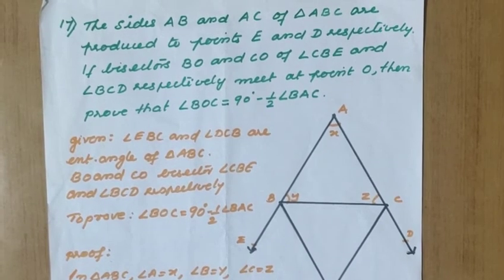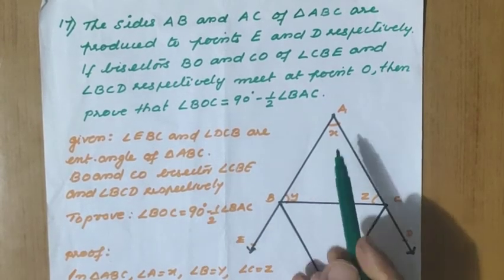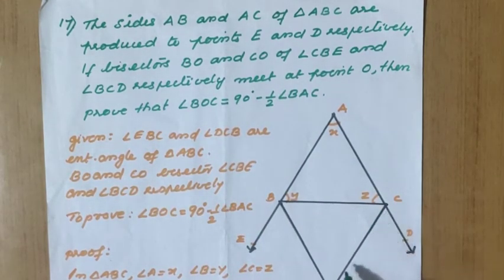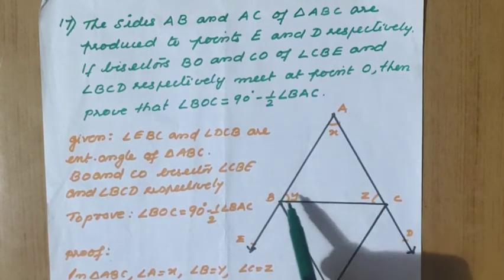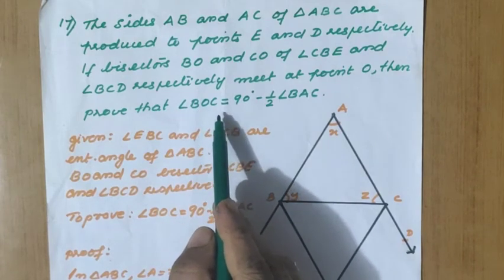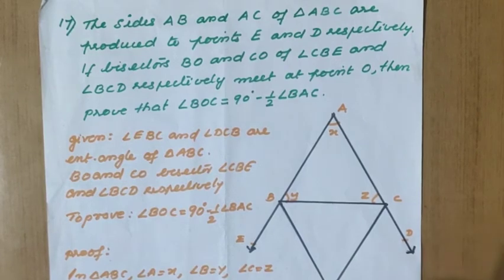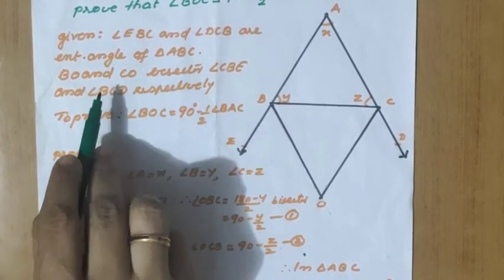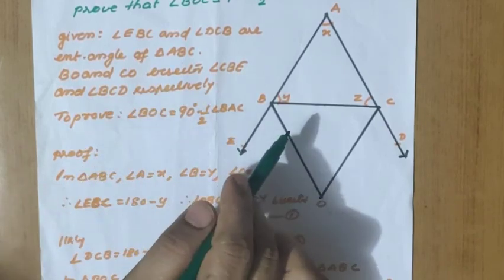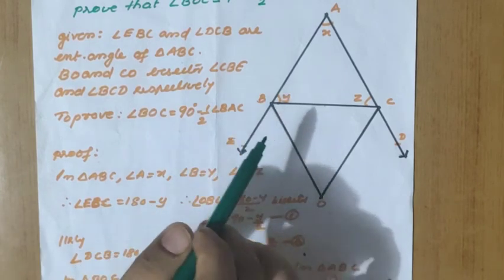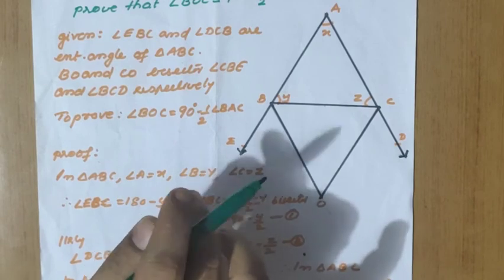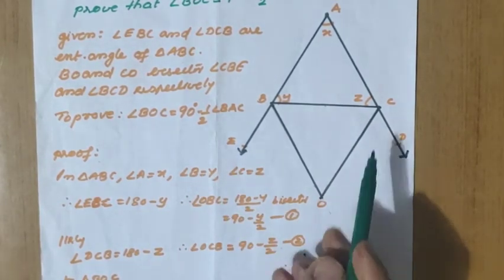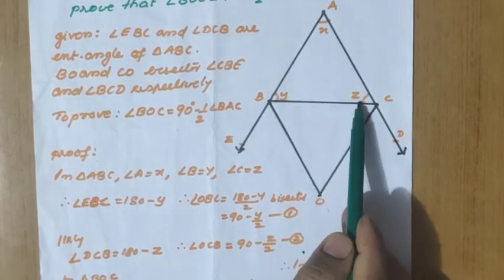Question number 17. The sides AB and AC of triangle ABC are produced to points E and D respectively. The bisectors of angle CBE and angle BCD meet at point O. Prove that angle BOC equals 90 minus half of angle BAC. Given: angle EBC and angle DCB are exterior angles of triangle ABC; BO and CO are bisectors of those angles. The diagram must be drawn after reading the question. Assume angle A equals x, angle B equals y, angle C equals z.